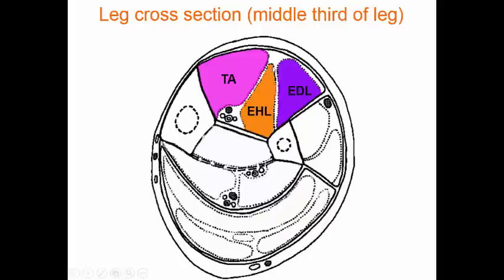Next we have extensor hallucis longus, followed by extensor digitorum longus. And when you look down at your foot, that's the order that we'd expect them to go in.